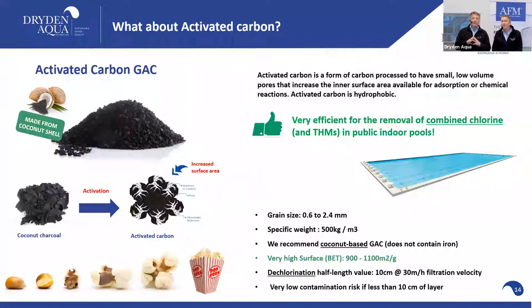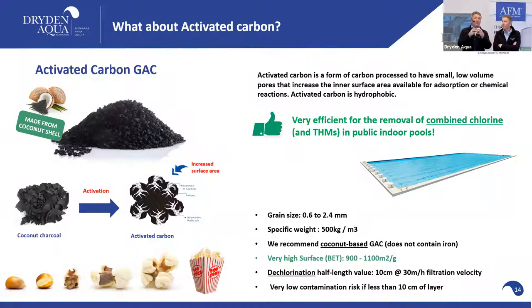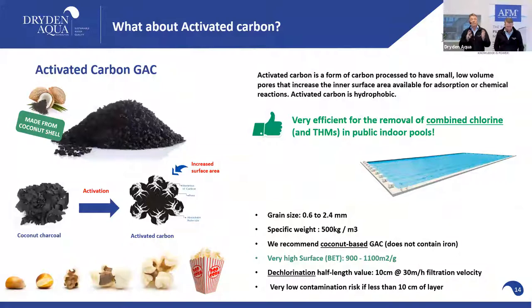Coconut-based carbon goes through a thermal activation process — you heat it to very high temperatures, like popcorn from a corn kernel — and you get a grain with a massive surface area, both outer and inner. We use activated carbon primarily to reduce combined chlorine and to some extent THMs. Key specs: grain size 0.6–2.4 mm, specific weight only 500 kg/m³ (three times lighter than sand), and a surface area of roughly 1,000 m² per gram — 1,000 times more than AFM and over one million times more than sand.